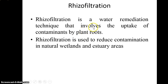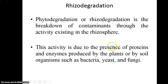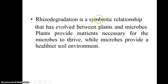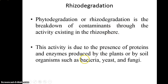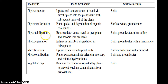Rhizofiltration: this technique mainly uses plant roots to uptake contaminants from water. It is used in wetlands and estuary areas. Rhizodegradation involves the concept of the rhizosphere — the symbiotic relationship between plants and microbes. The plant provides nutrients to microbes, and in return, microbes provide proteins and enzymes to degrade contaminants absorbed by the plants.